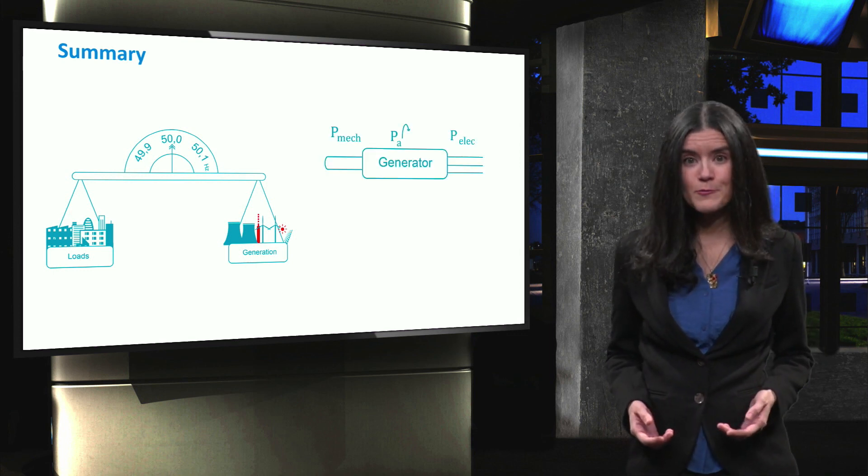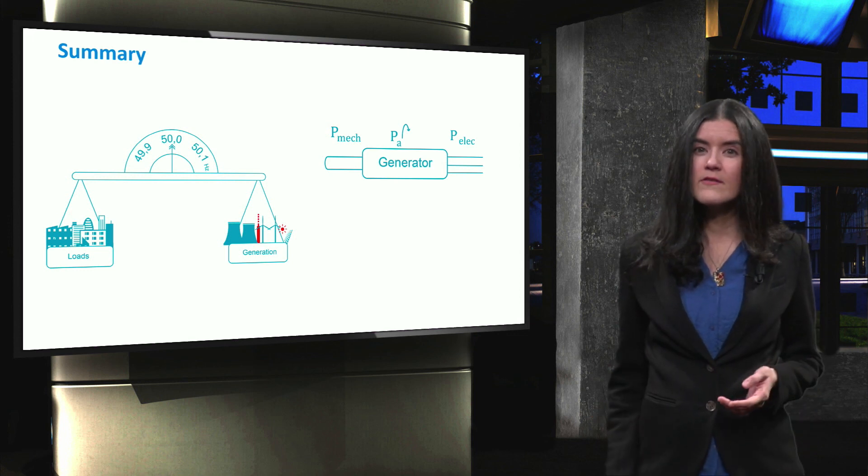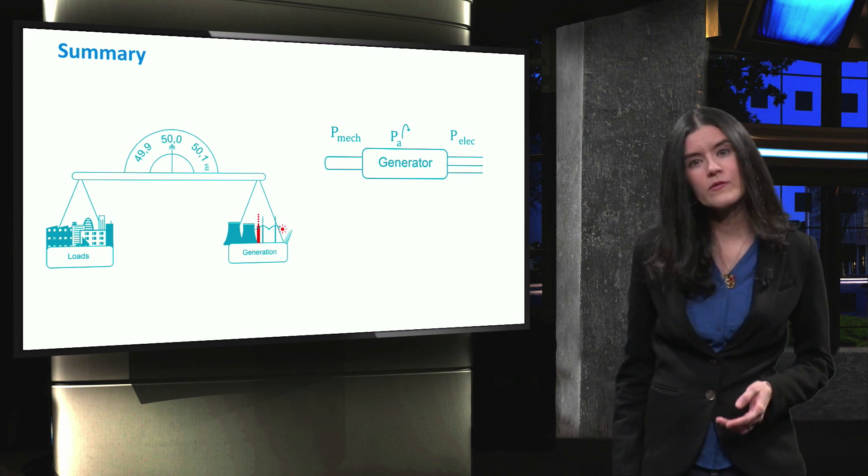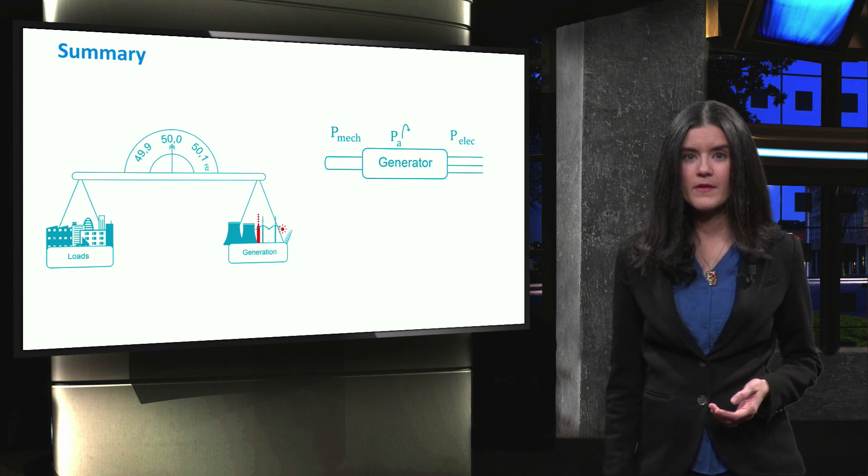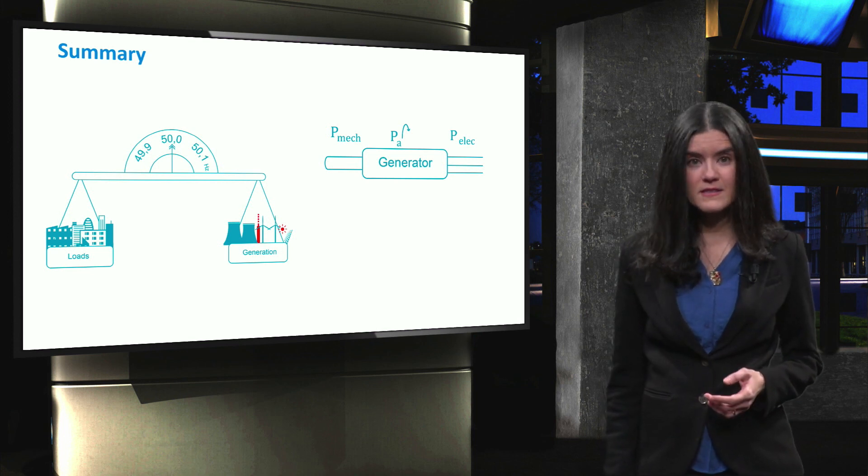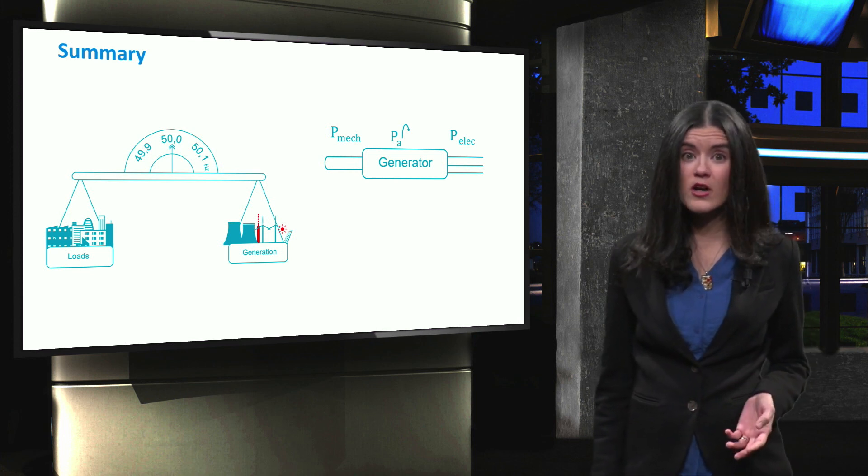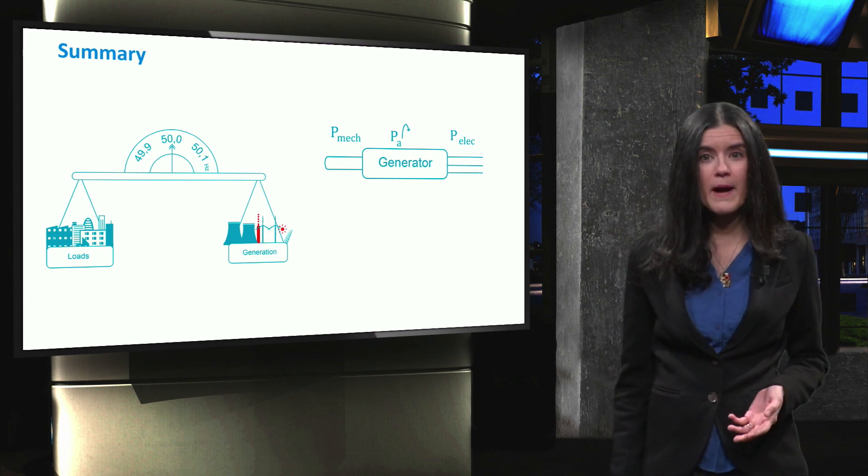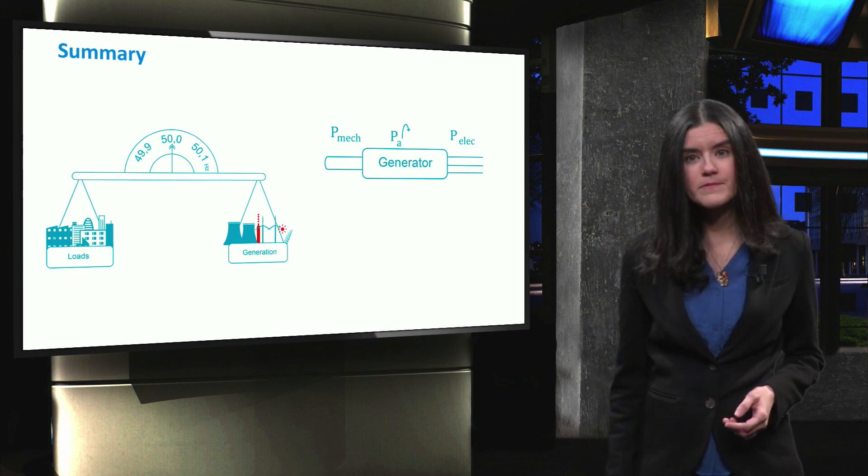When a mismatch in electrical power is present in the system, the connected generators will have to increase or decrease their speed. This will produce an accelerating power on the turbine shaft, in order to match the output electrical power and the input mechanical power.